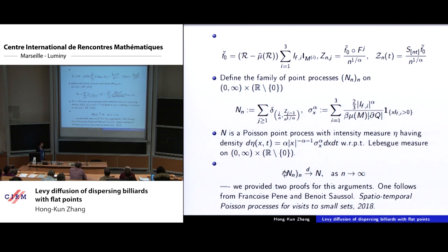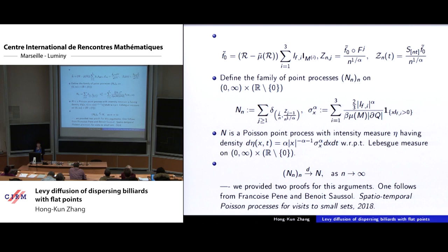To summarize: we proved for the induced map the convergence to the Lévy process, and the result is nice. The question is: what happens to the original system? Very luckily, we have another advanced tool — a theory proved by Melbourne and others who are present here. They proved that if you can show convergence to Lévy for the induced process in M1 topology, then the original process also converges in M1 topology, provided you check condition f*. The real meaning of f* is that you count the change of sign: when x enters the cusp, you must ensure the change of sign is not comparable to n^{1/α}, i.e., it converges to zero.